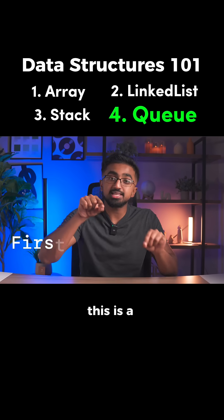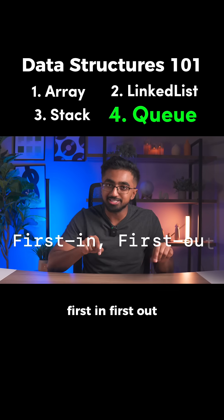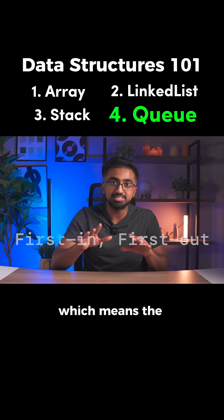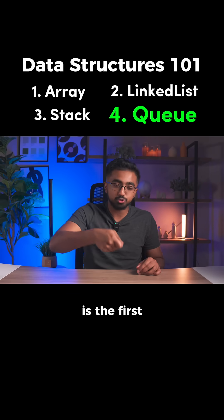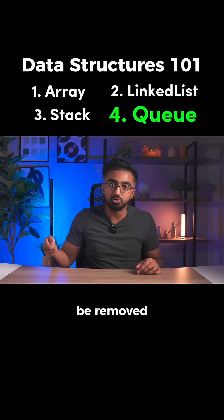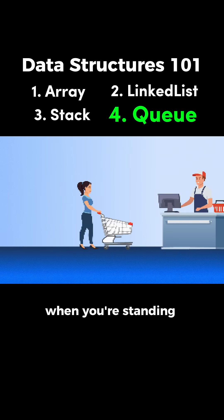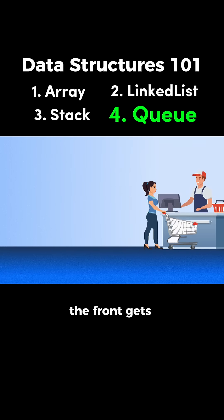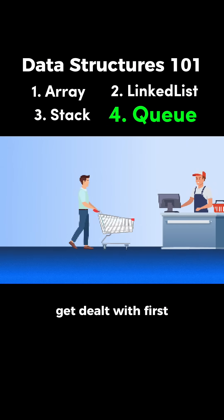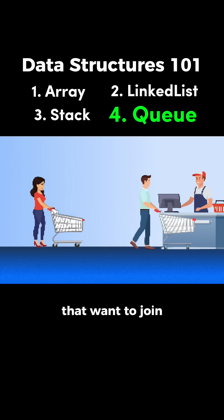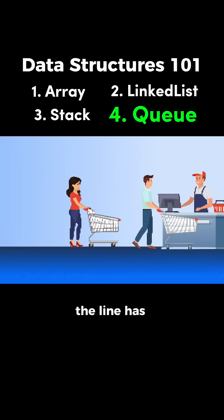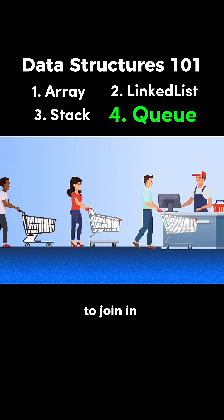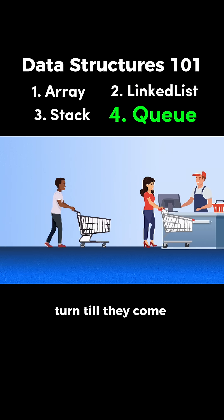The queue is first in, first out, which means the first element added is the first element to be removed. Think of it like standing in line at the store — the person at the front gets to checkout first. Any new people that want to join the line have to join at the back and must wait their turn until they come to the front.